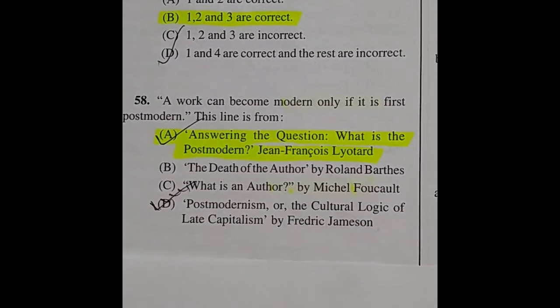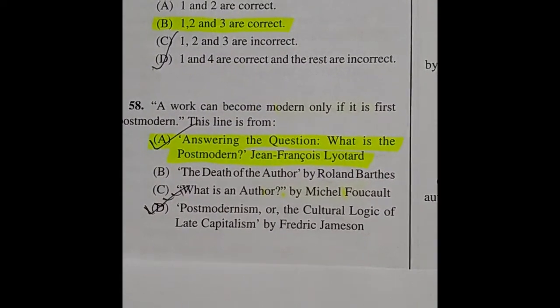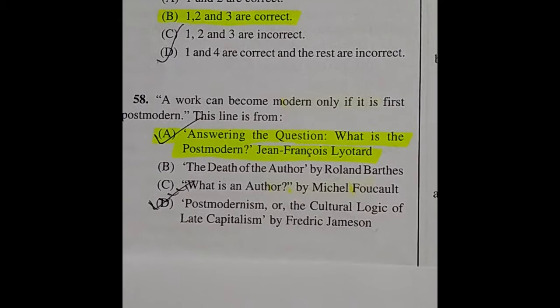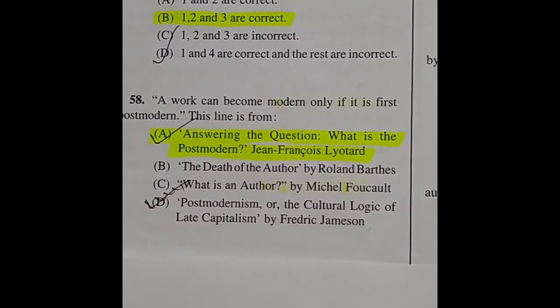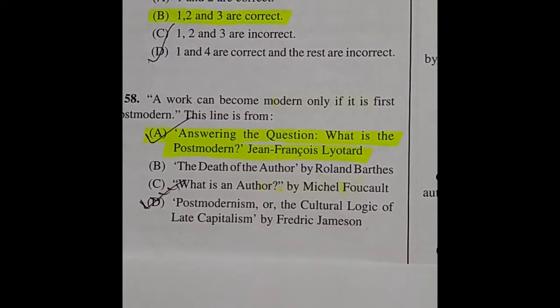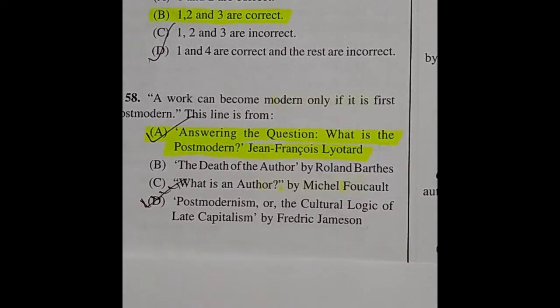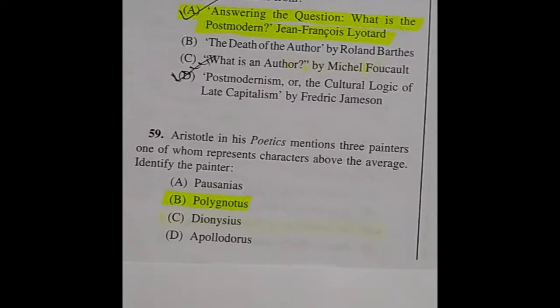Question 58: 'A work can become modern only if it is first postmodern' — this line is from the right answer: option A — answering the question 'What is the Postmodern?' by Jean-François Lyotard.